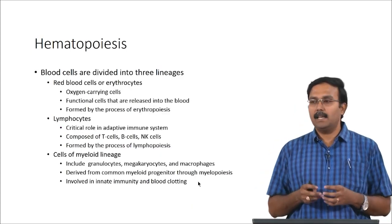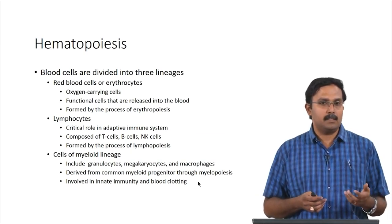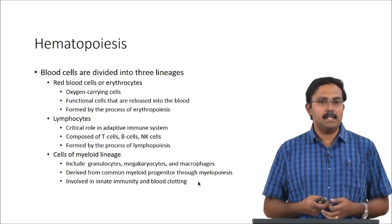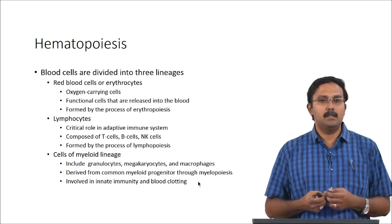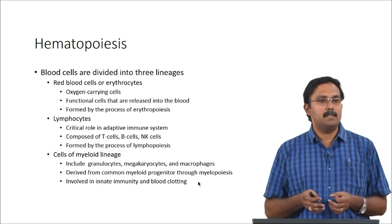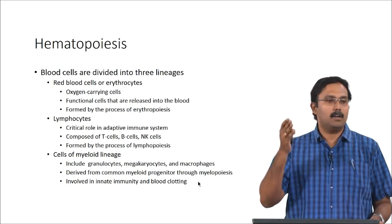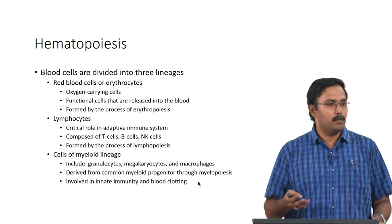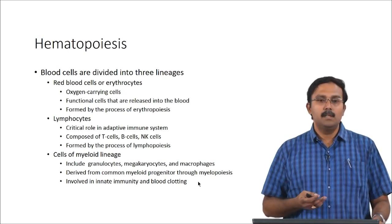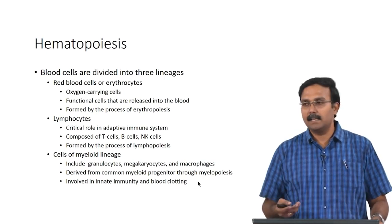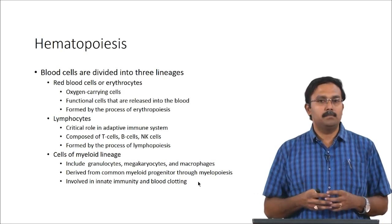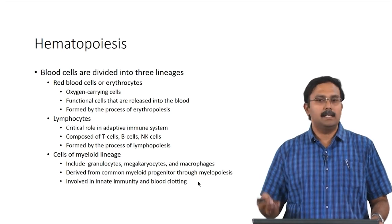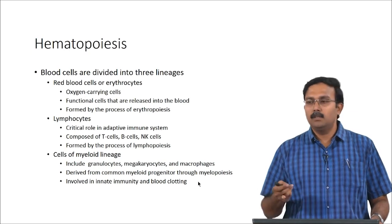In general, blood cells are divided into three lineages. First, red blood cells or erythrocytes — the oxygen-carrying cells which have hemoglobin, bind oxygen, and carry it to the site; these are formed by erythropoiesis. You also have lymphocytes, which have a critical role in immune response and especially in adaptive immune systems — composed of T cells, B cells, and NK cells — formed by lymphopoiesis. Cells from a myeloid lineage include granulocytes, megakaryocytes, and macrophages, derived from a common myeloid progenitor through myelopoiesis.